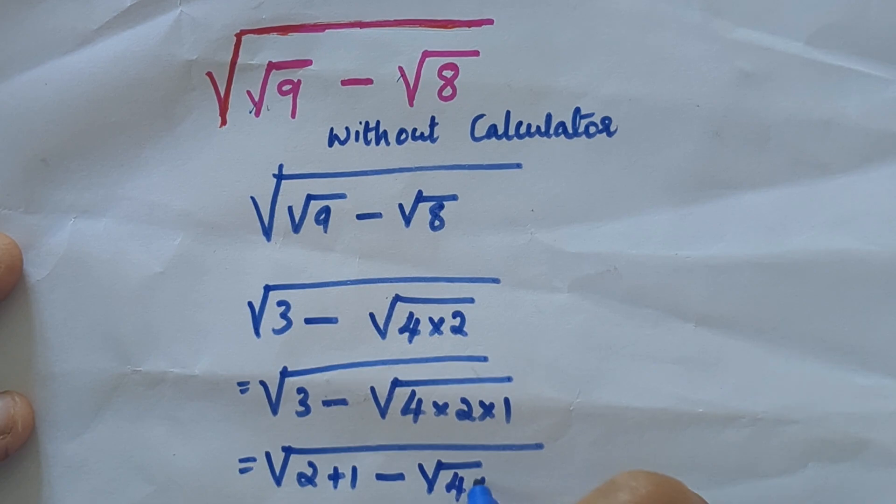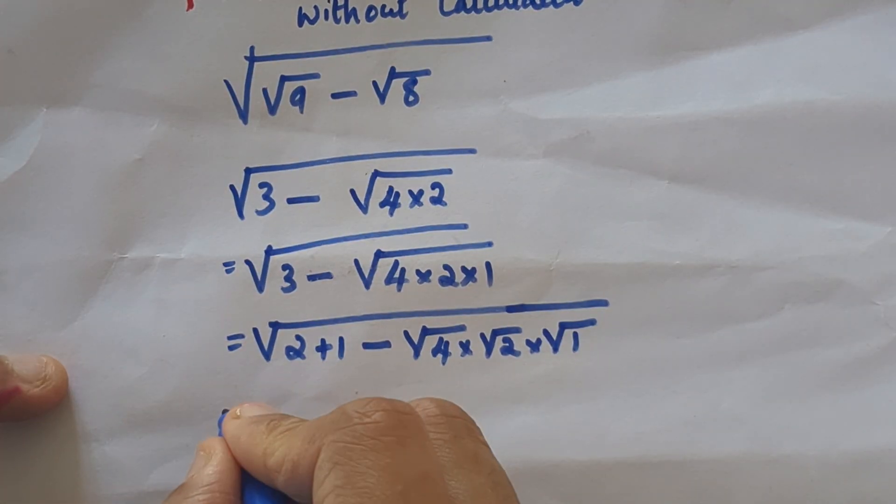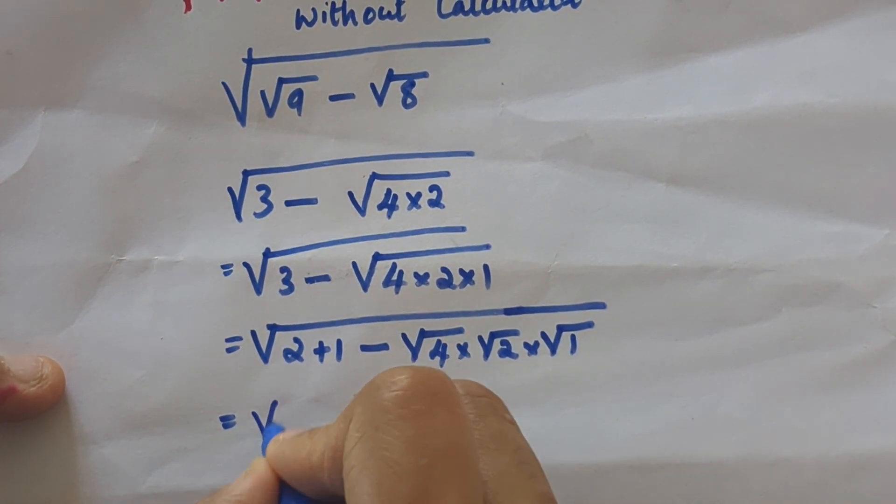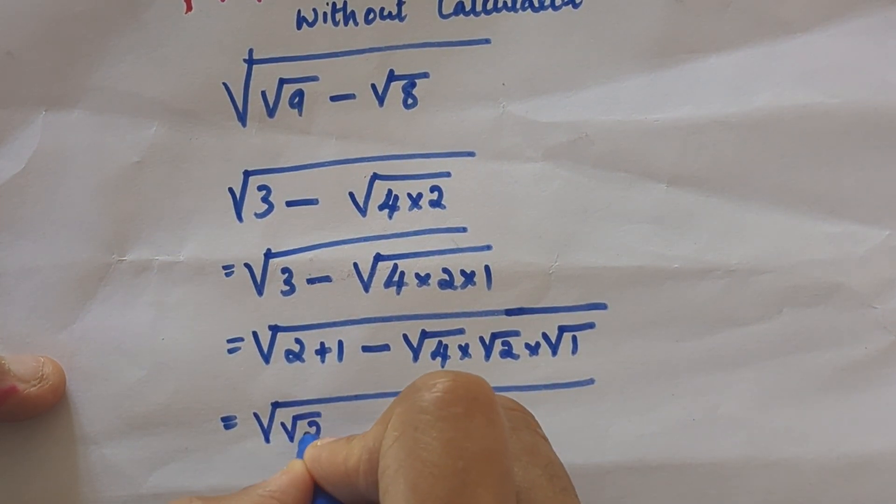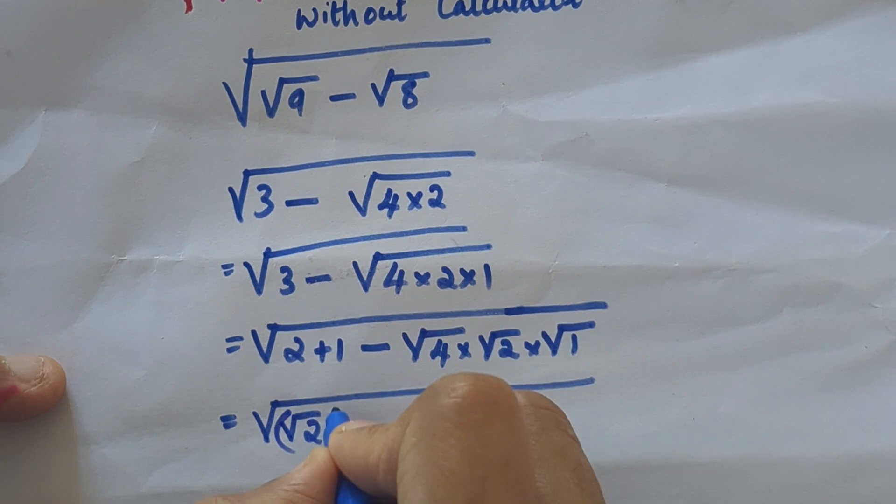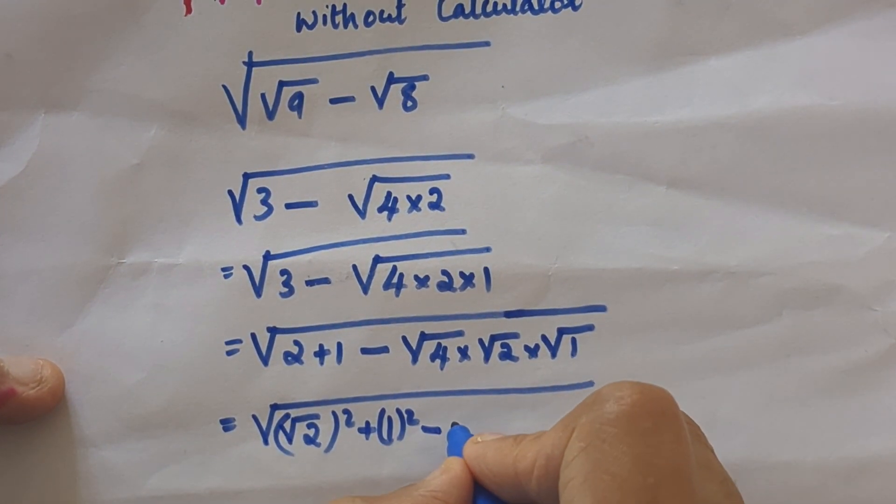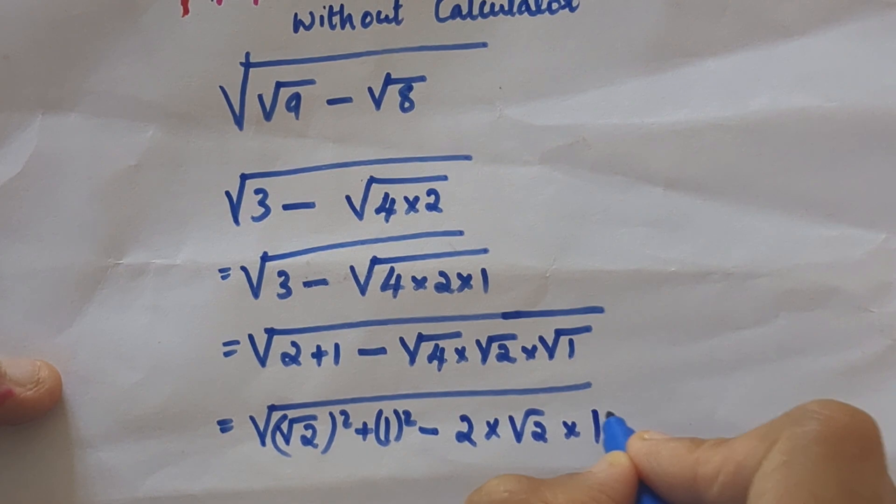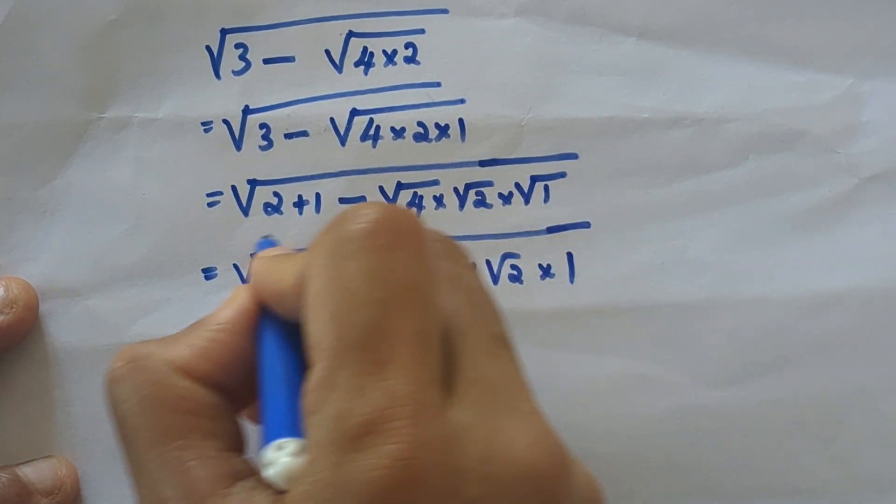So 2 plus 1 minus root of 4 into 2 into 1. Root of 4 into root of 2 into root of 1, which is equal to root of 2 plus 1, root 2 the whole square plus 1 the whole square minus root 4 is 2 into root of 1.